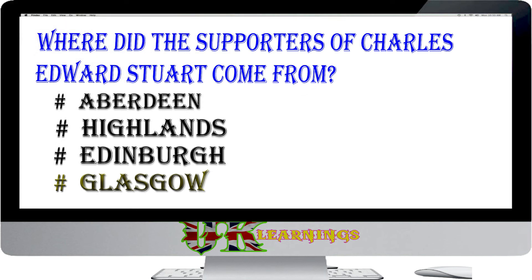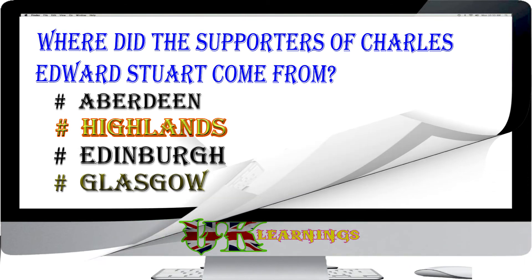Where did the supporters of Charles Edward Stuart come from? Options: Aberdeen; Highlands; Edinburgh; Glasgow. The answer is Highlands. Charles Edward Stuart — Bonnie Prince Charlie — the grandson of James II, landed in Scotland. He was supported by clansmen from the Scottish Highlands and raised an army.